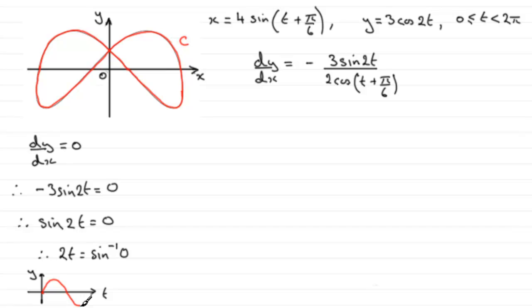Bottoms out at 270 degrees, 3 pi upon 2 radians, and back here at 360 degrees or 2 pi radians. So, we need to get our solutions then.